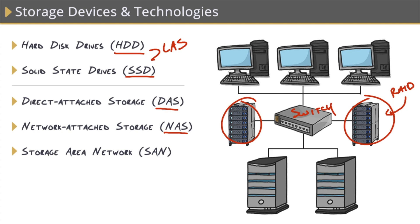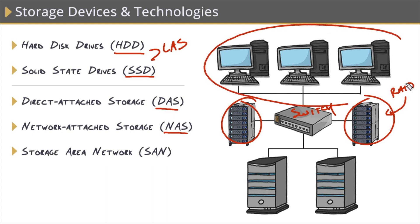The benefits of Network Attached Storage are: number one, they're reliable, as we just saw; and number two, they're scalable. These enclosures make it very easy for us to add and remove drives on the fly. The downside of Network Attached Storage is that they are directly connected to our Ethernet networks, which can result in network congestion and clog up those pipes for everybody else.